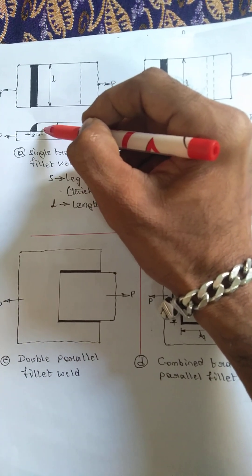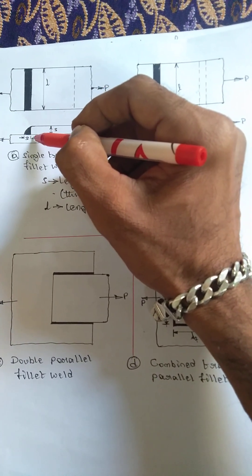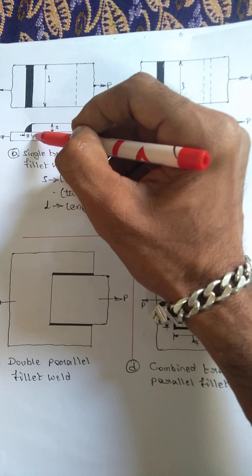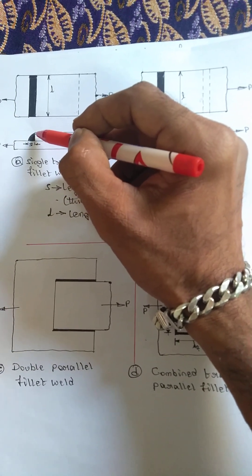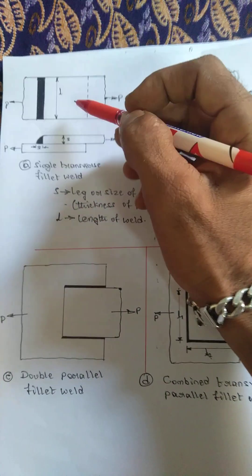Thickness of the weld is equal to the thickness of the plate because what is needed is to join this plate to this plate. The welding is done only till here. This is the length of weld - from here to here the welding is carried out.